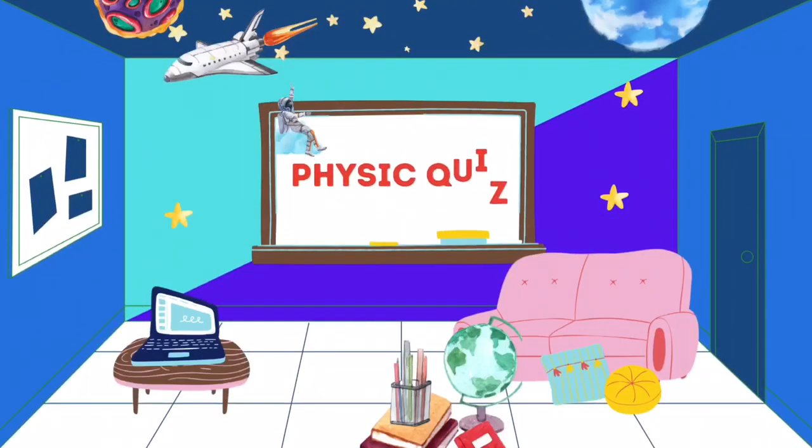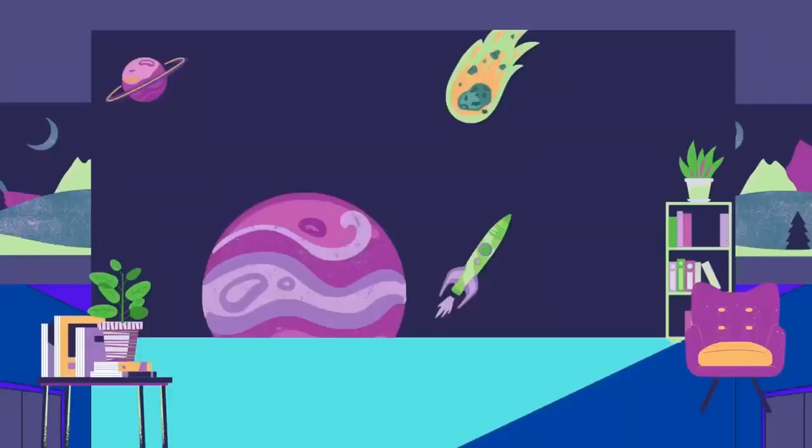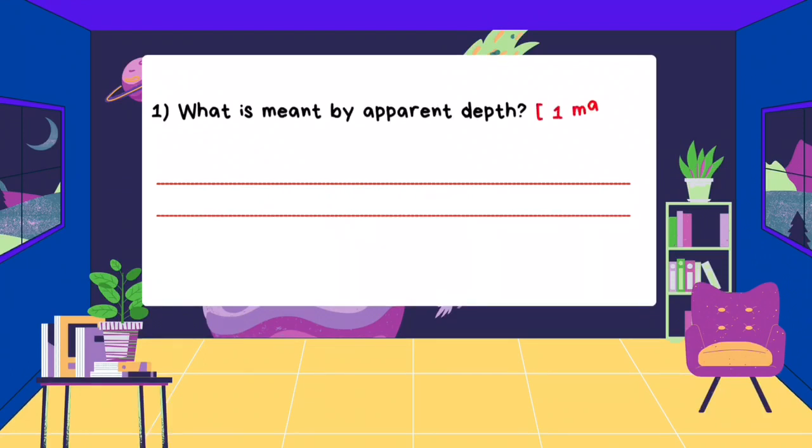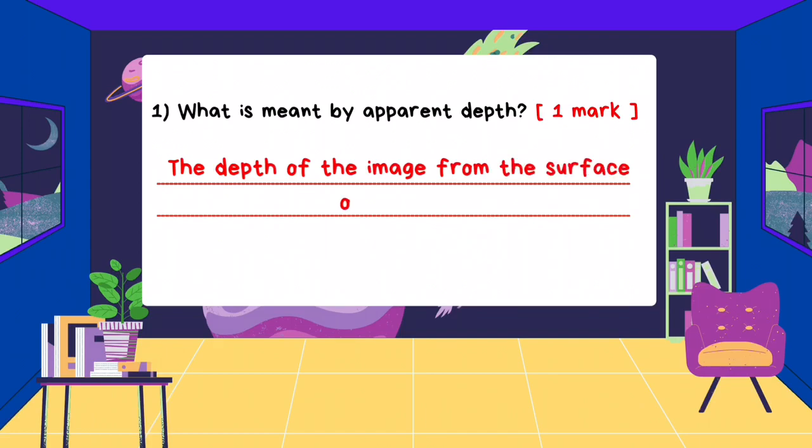Now, it's quiz time! Round 1. What is meant by apparent depth? The depth of the image from the surface of medium.